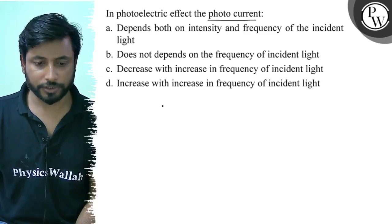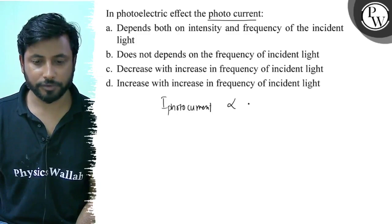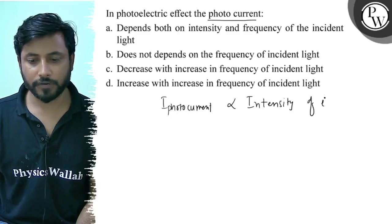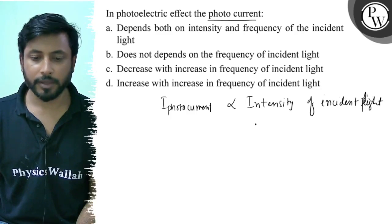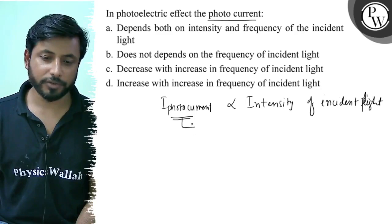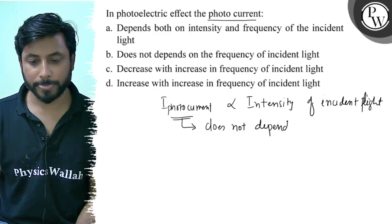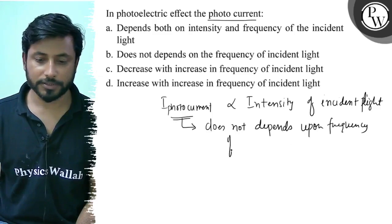The photo current only depends upon intensity — only depends upon intensity of incident light. It does not depend upon frequency of incident light.